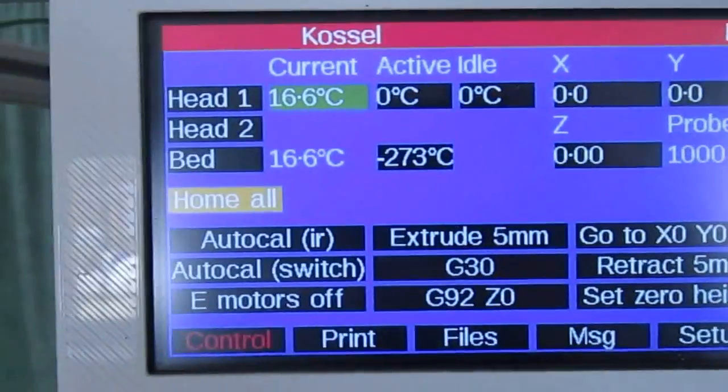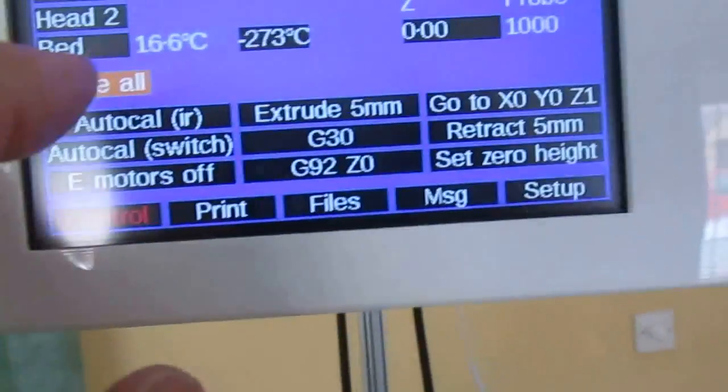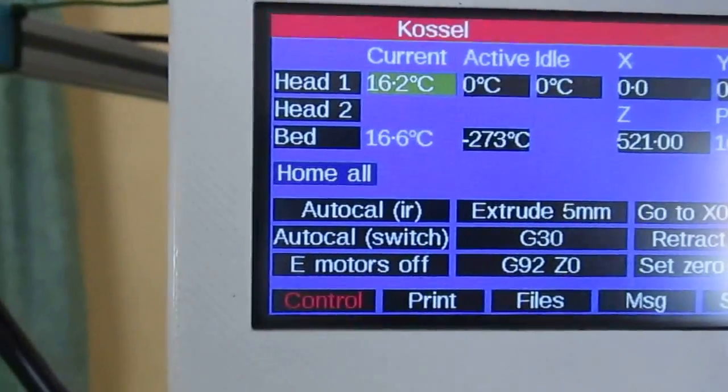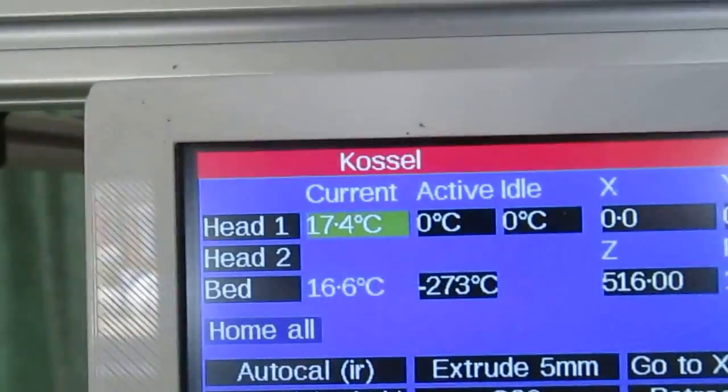So the LCD panel is now fired up and first thing I will do is home the printer like this. So now that it's homed I can tell it to auto calibrate.